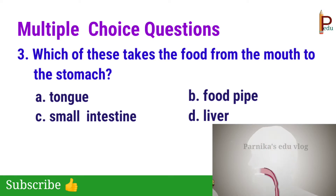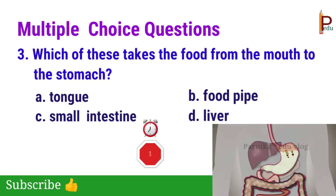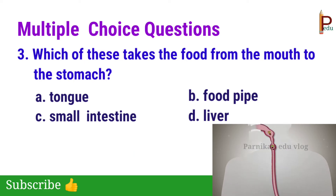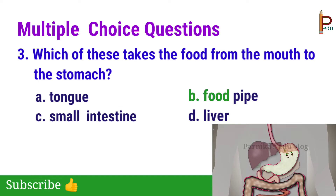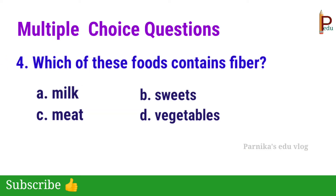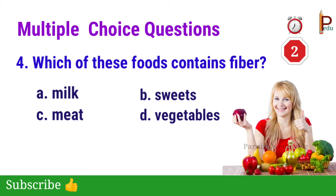Third one: which of these takes the food from the mouth to the stomach? The answer is B — food pipe. Fourth one: which of these foods contains fiber? The answer is D — vegetables. Vegetables contain lots of fiber, which helps for good digestion.